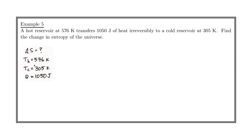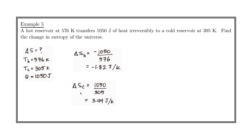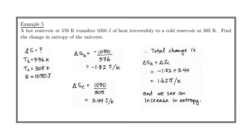We want to find delta S. We know TH, TC, and the amount of heat that flows. The change in entropy of the hot reservoir is 1050 over 576, and we impose a negative sign because heat is flowing out of the hot reservoir — giving minus 1.82 joules per Kelvin. For the cold reservoir, 1050 joules of heat enter at 305 Kelvin, giving plus 3.44 joules per Kelvin. The total change in entropy, delta SH plus delta SC, equals 1.62 joules per Kelvin.